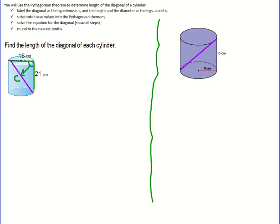So I'm going to label my sides with A, B, and C. Write A squared plus B squared equals C squared. For my legs I'm going to label 16 as A. That's the diameter of the cylinder. My other leg is the height of the cylinder. I'm going to label that B.